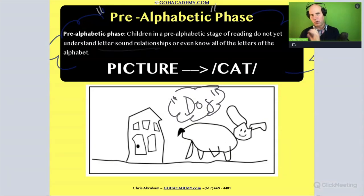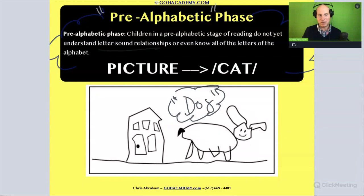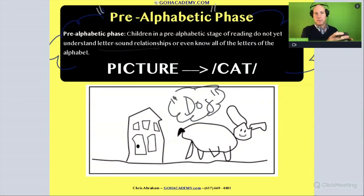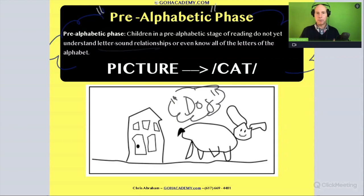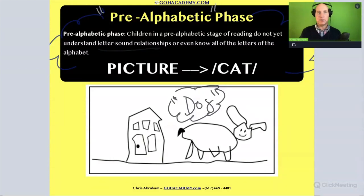If a child is at a pre-alphabetic stage of reading, you wouldn't use a decodable text because they don't have the alphabetical principle down. You also wouldn't use an informational text or a chapter book because they're not ready for those yet. You'd probably start with something like a predictable text or a picture book — something the student can access through illustrations and drawings.